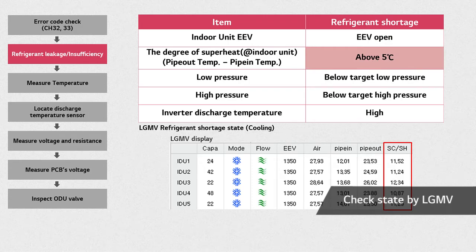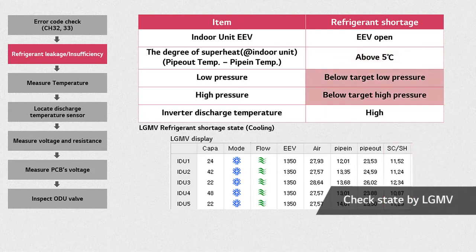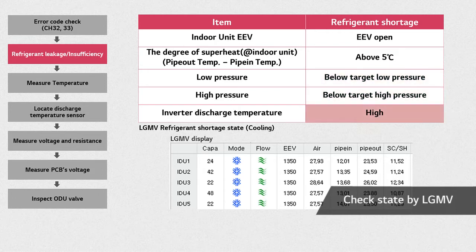Superheat is the difference between the pipe-out temperature and the pipe-in temperature of the indoor unit. Also, when both low and high pressure are below the target pressure for each, or the discharge temperature of the inverter is higher than usual, you can tell there is a lack of refrigerant.